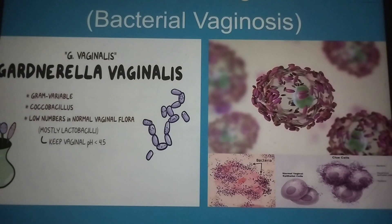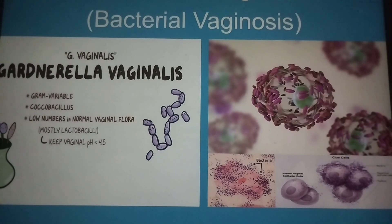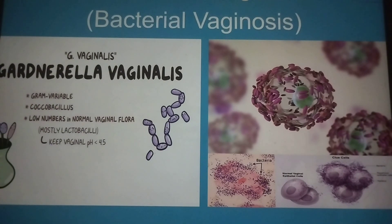Now we go to your Gardnerella vaginalis, the one which causes your bacterial vaginosis. This is a very favorite exam question. Gardnerella vaginalis is a gram-variable coccobacillus that occurs when there are low numbers of lactobacilli in the normal vaginal flora. You all know that your lactobacilli keeps your vaginal pH at less than 4.5. When you have depletion of your lactobacilli, then you have this infection.